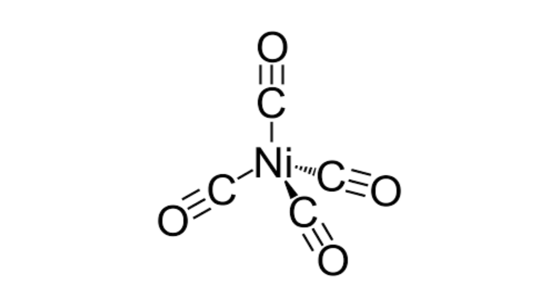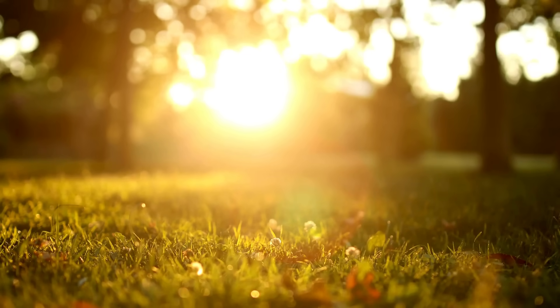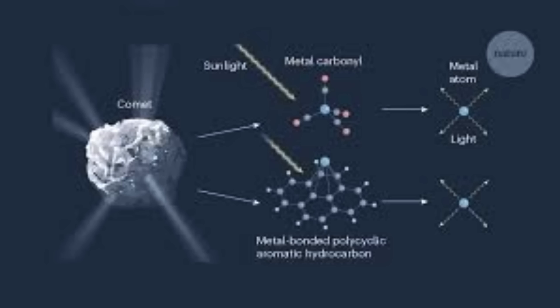The VLT team pinpointed the likely culprit, nickel-tetracarbonyl, a volatile compound that forms in carbon-rich, oxygen-poor environments and breaks apart in sunlight, releasing nickel atoms that glow in the ultraviolet. This suggests 3I-Atlas formed in a cold, carbon-heavy disk, where nickel bonded with carbon monoxide before being locked in ice.